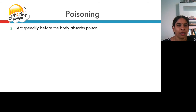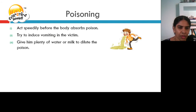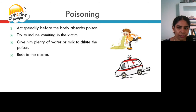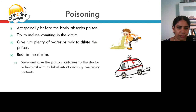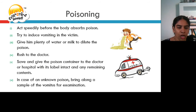When a person is poisoned, we need to act speedily before the body absorbs it. We need to induce vomiting in the victim. Give him plenty of water or milk to dilute the poison. Rush to the doctor. Save and give the poison container to the doctor or hospital with its label intact and any remaining contents. In case of an unknown poison, bring along a sample of the vomitus for examination.